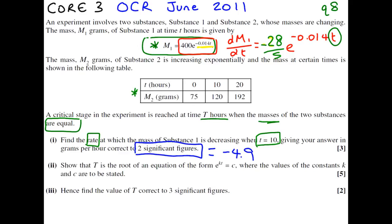Now, show that t is the root of an equation of the form e to the kt equals c, where the values of the constants k and c are to be stated. That means we need an expression for m2. We've got an expression for m1. If we get an expression for m2 and set them equal, that will show us the values of constants at that special time t.